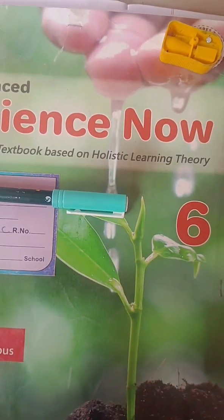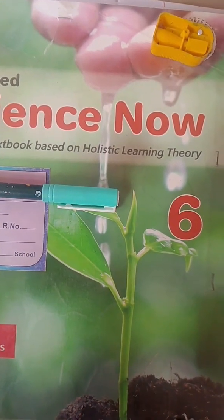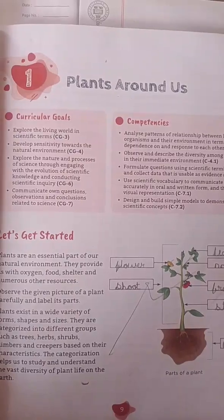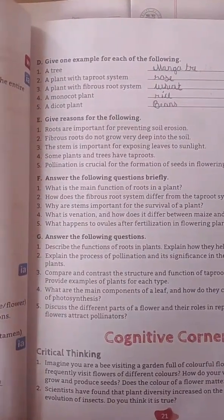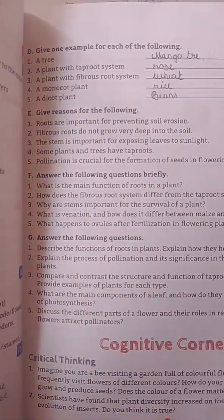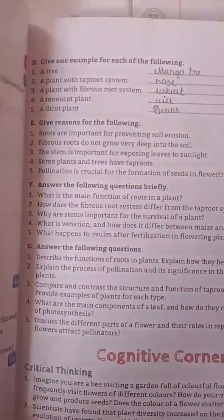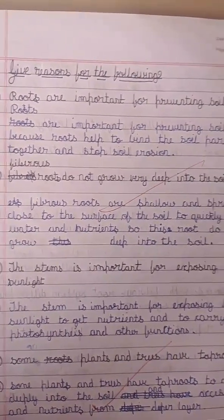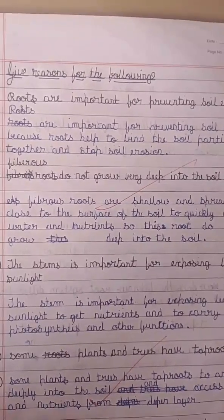Hello friends, today I'm going to be reading the science subject, lesson number one: Plants Around Us. Give reason for the following. First question: roots are important for preventing soil erosion. Answer: roots are important for preventing soil erosion because...